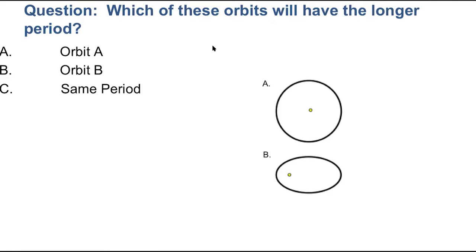So in this video, we're going to learn some more about that, put those things to the test, quantify them a little bit more, and make sure we understand what's going on. First question: which of these two orbits — I've got two orbits here, A and B — will have the longer orbital period? I will tell you that the distance across these from here to here and from here to here is exactly the same, although obviously the eccentricities of these two orbits are different, A being a perfect circle and B being somewhat elongated.